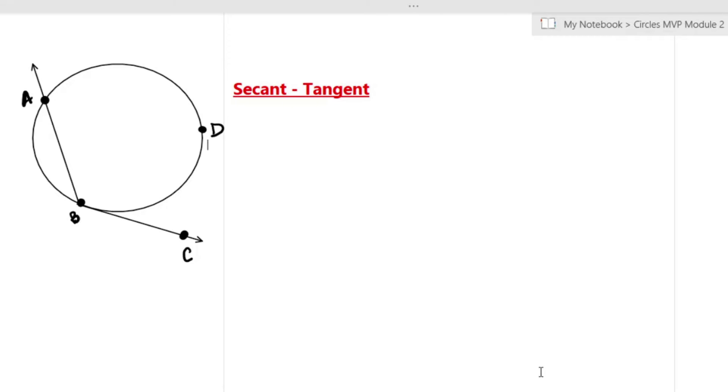Hey guys, in this video I want to talk about what happens when a secant and tangent intersect. In the image to the left we've got a secant and a tangent. The secant is the line that goes from one end of the circle to the other end, so line or segment AB. And then the tangent is the line that intersects our circle at just one point, so that's BC.